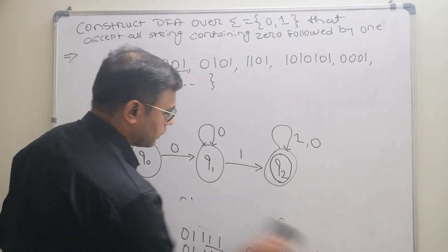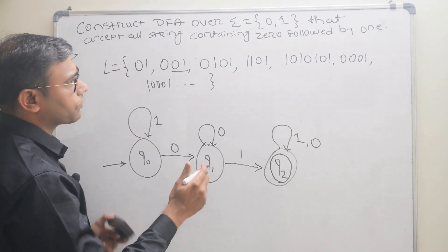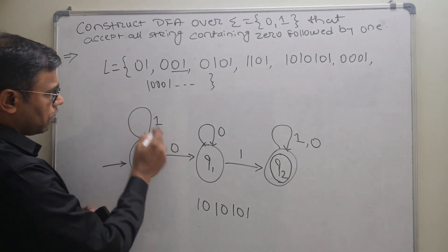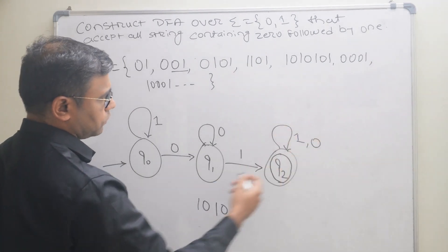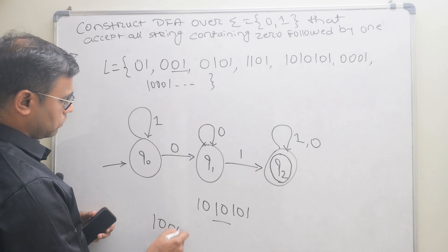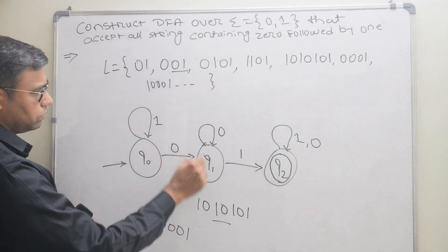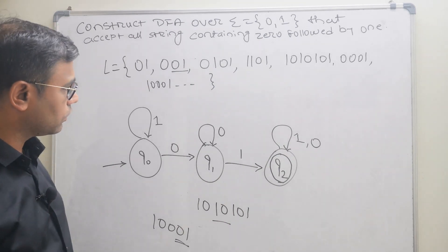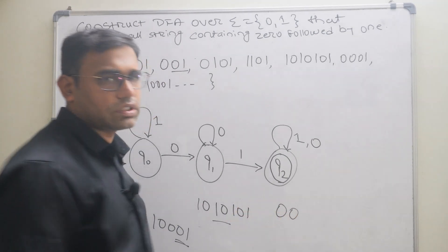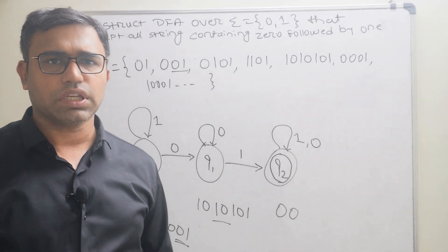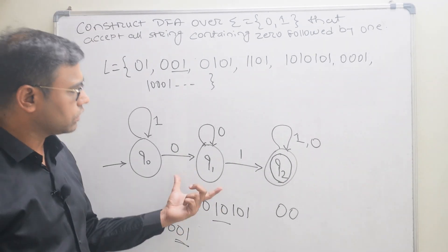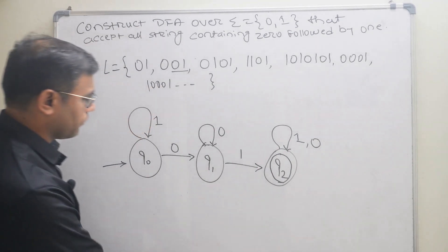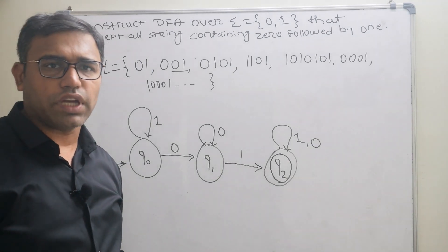Now let us verify with new values like 10101010 and 1000001 — all these strings are accepted. The DFA is not accepting any invalid string, such as 00, which never reaches the final state. When the string reaches the final state q2 in the DFA, it is accepted. This is the final deterministic finite automata in which every zero is followed by one. That's it for this video, thank you.